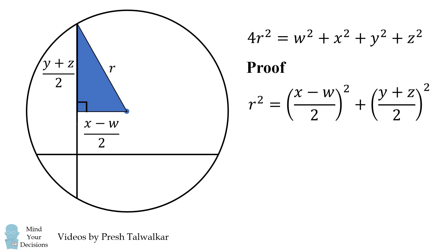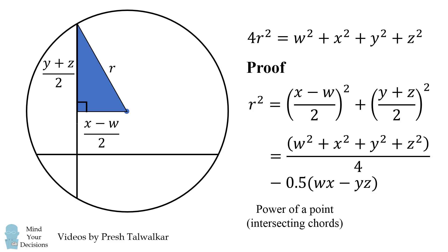Now we use the Pythagorean theorem to get that the square of the hypotenuse is equal to the summed squares of its legs. We can then expand and simplify this formula. Now we use the power of a point formula that wx is equal to yz, so we notice these two terms cancel out.